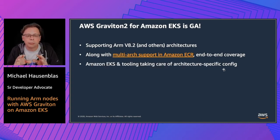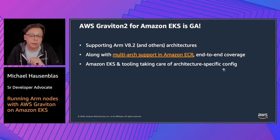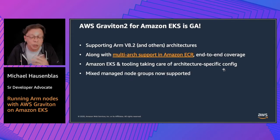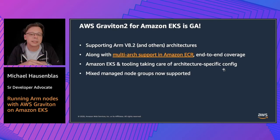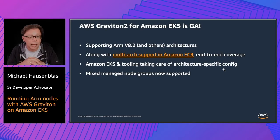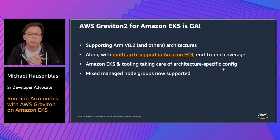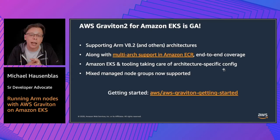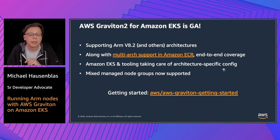We have EKS and the tooling taking care of architecture-specific configuration, so you essentially only need to build the artifacts and everything else is taken care of for you. You can now also have mixed managed node groups in production — meaning you can have ARM-based architecture and other architectures in your EKS cluster. We put together a repository on GitHub, so please check it out and give it a try.